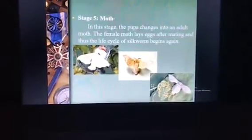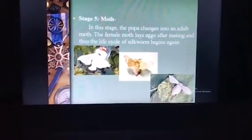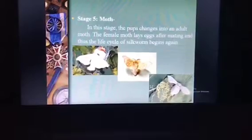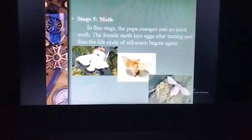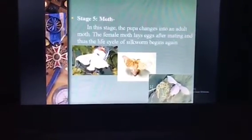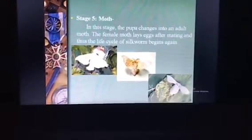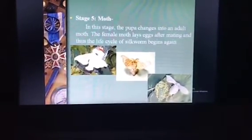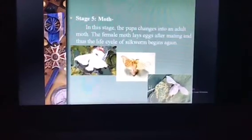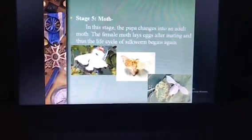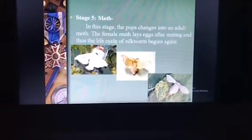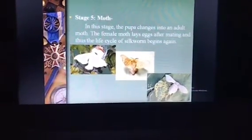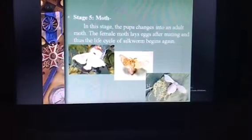Stage 5. The moth. In this stage, the pupa changes into an adult moth. The female moth lays eggs after mating, and thus the life cycle of the silkworm begins again.